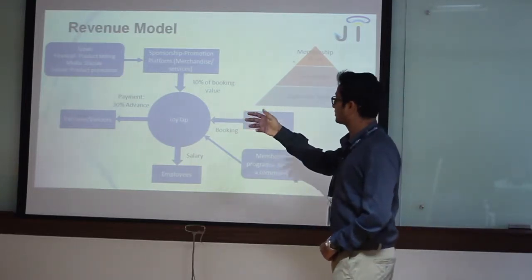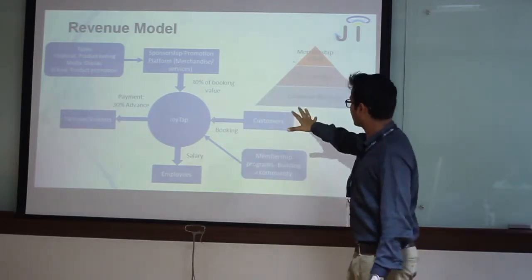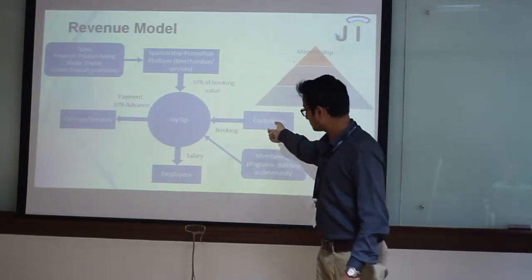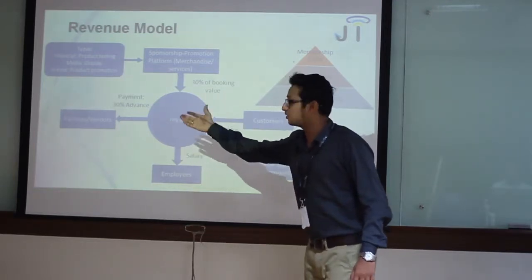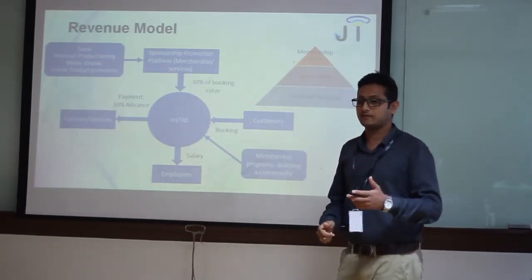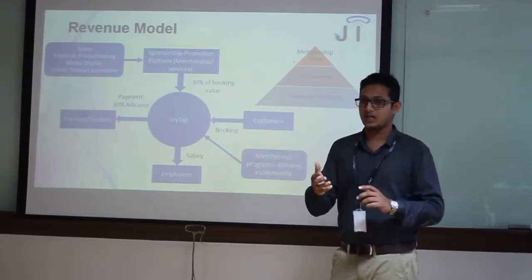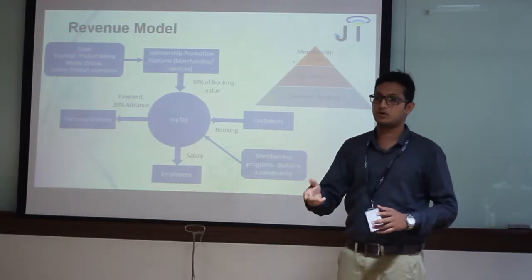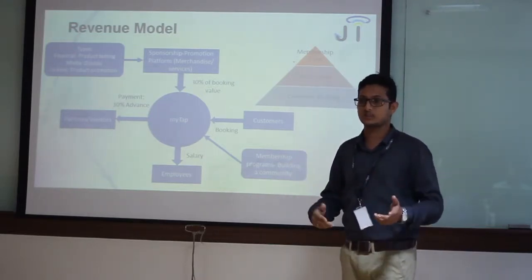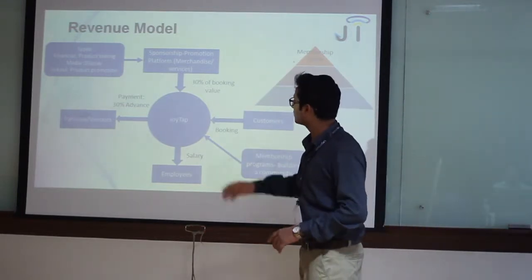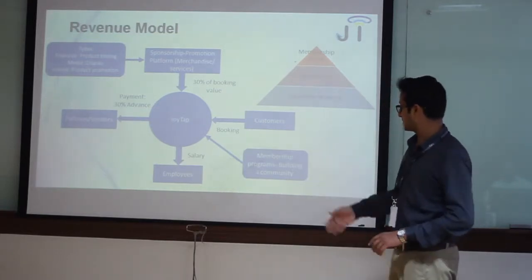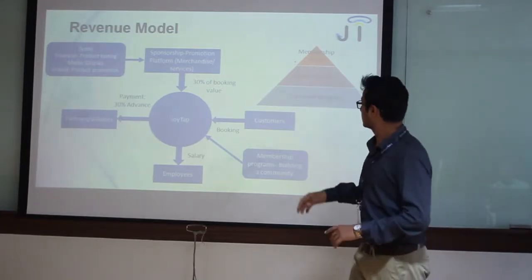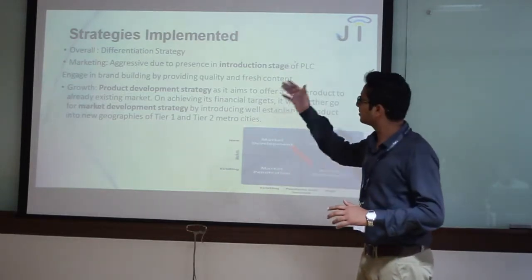This is the revenue model for JoyTab. The major bookings are coming from customers, as you can see in this revenue pyramid — the major revenue is generated from customer bookings. We are paying 30% to the partners or vendors — that 30% is the amount they are offering to customers that we have to pay them. Sponsors have a 30% booking value — if any sponsor wants to showcase or launch their product, they contribute accordingly. We are also looking at membership programs, where communities can be part of the ecosystem.